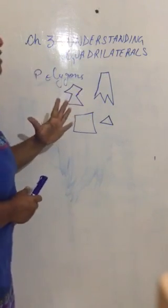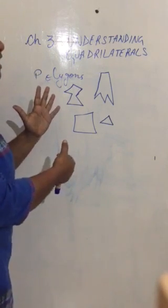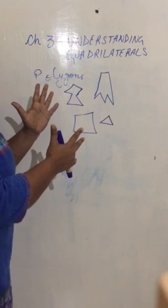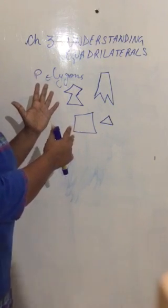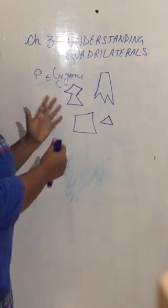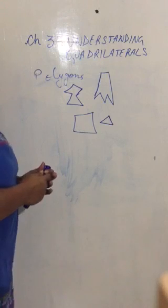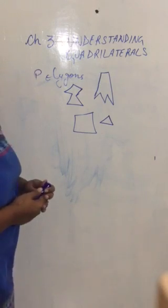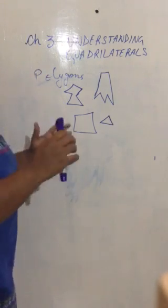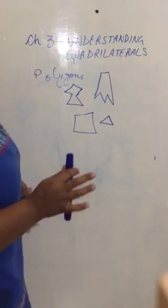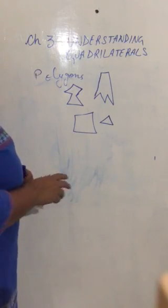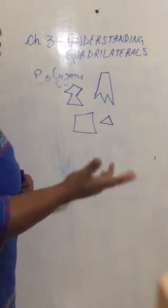With five sides, pentagon. Six sides, hexagon. Seven, heptagon. Eight sides, octagon. Nine sides, nonagon. Ten sides, decagon. Then what about a polygon having 16 sides? We will call it a 16-gon polygon, or simply 16-gon — a polygon having 16 sides.